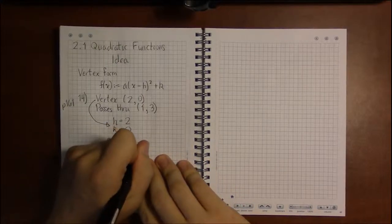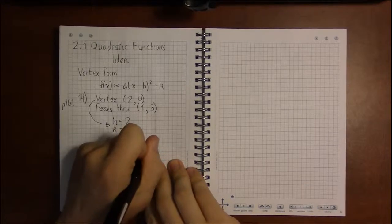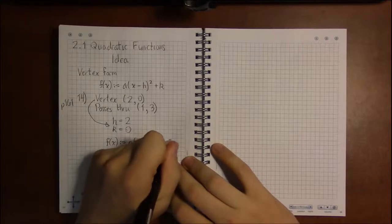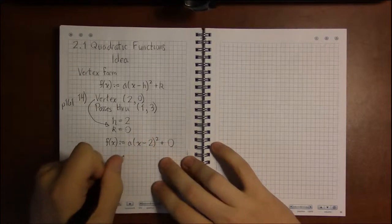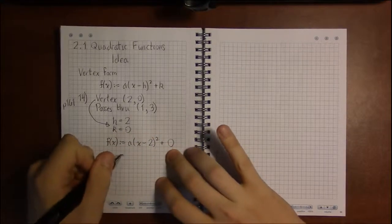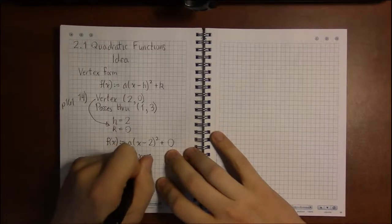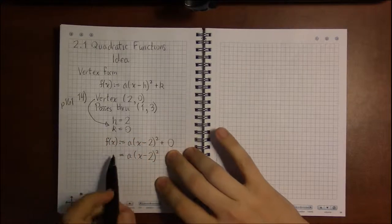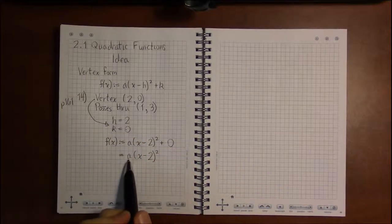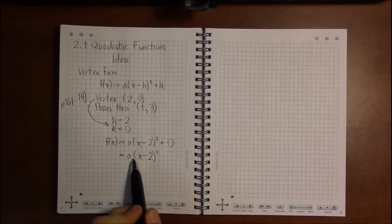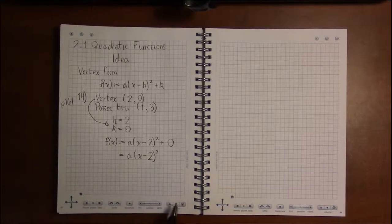So what we have so far is we have a quadratic and we know this much: we know that H is 2 and that K is 0. So if we simplify this, because adding 0 in effect does nothing, we get that our quadratic is some number, which we're calling a right now, times (x - 2)².